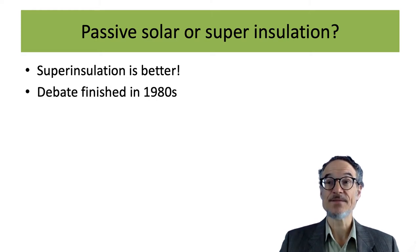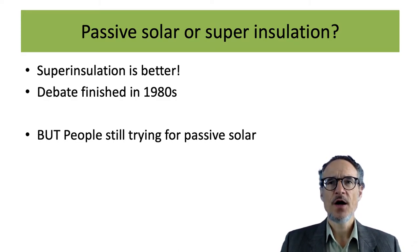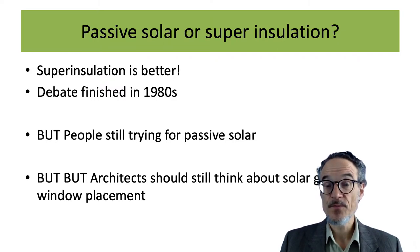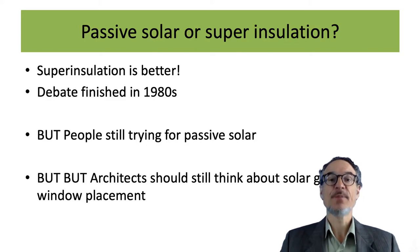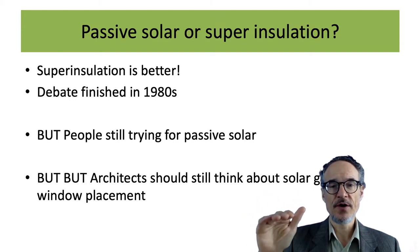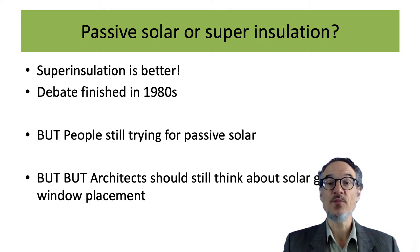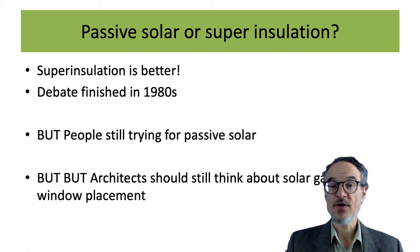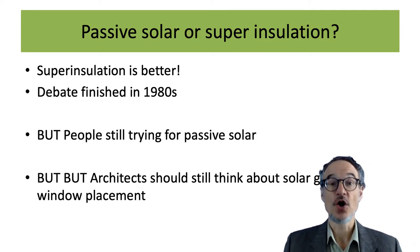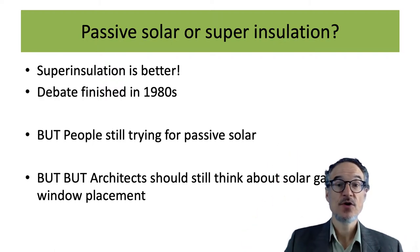There was a debate between passive solar and super insulation, and basically super insulation is better — the debate finished in the 1980s. Solar gain is still important, and where you put windows matters, especially at passive house level where the heating is a small part of energy gains. It's also very important to think about the summer and stopping solar gain when it's hot, using shading above windows or shutters.